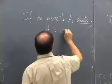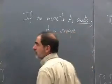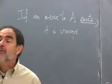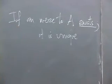If it exists, it is unique. So one can talk about the inverse of a matrix. There can't be two different matrices that serve as an inverse for a matrix. And the reason is the following.